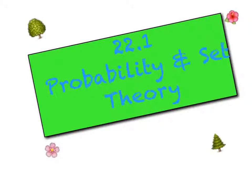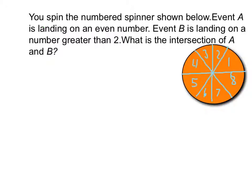Hi guys, so today we're going to learn about probability and set theory. Your problem is you spin a numbered spinner shown below. Event A is landing on an even number and event B is landing on a number greater than 2. What is the intersection of event A and B?